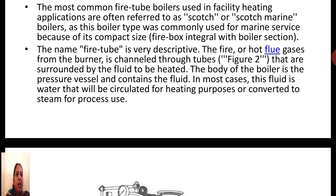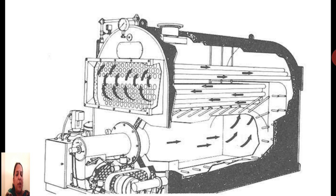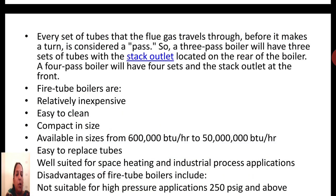From the name itself, the fire or gases from the burner are channeled through the tubes, while the tubes are surrounded by the fluid to be heated. This picture depicts the fire tube boiler — the tubes carry the gases while the area around the tubes is filled with water, which gets heated. This is just the reverse of the water tube boiler, which we will discuss next to understand the difference.